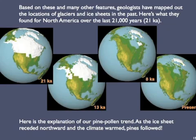By taking an inventory of these features and gathering clues about how long ago they formed, geologists have figured out the locations and ages of glaciers and ice ages over the last few million years. Here are maps showing the extent of ice in North America at different times over the last 21,000 years — since the peak of the last ice age. The ice retreated somewhat between 21,000 and 13,000 years ago and retreated greatly between 13,000 and 8,000 years ago. These reconstructions offer a clear-cut explanation of the pine pollen we saw earlier: as the ice sheet and colder conditions receded northward, the pine trees followed.